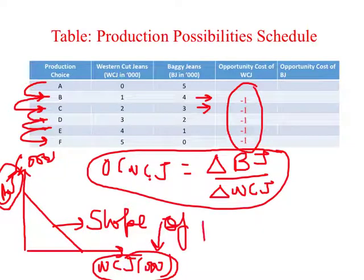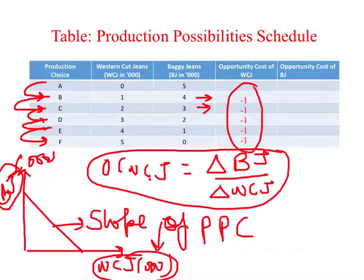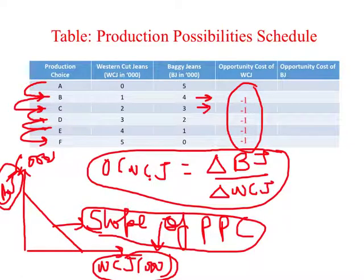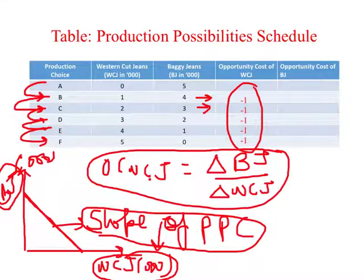If opportunity cost is a fixed number — negative 1 throughout — that represents a constant slope. And when do we have a constant slope? When we are looking at a straight line. So in this example, what we have is a straight-line PPC, and what does it represent? It represents constant opportunity cost.